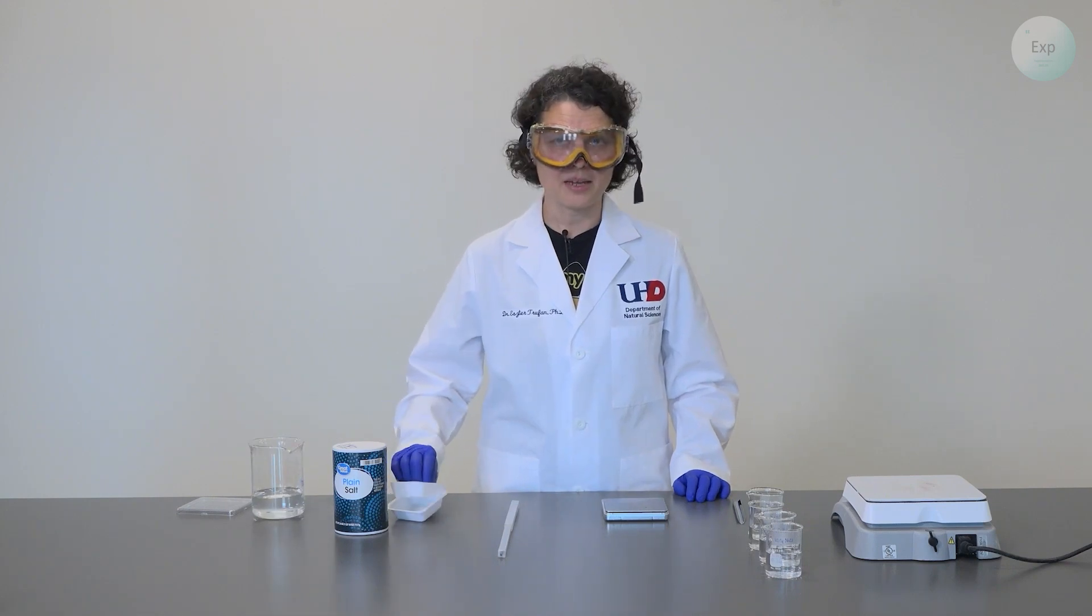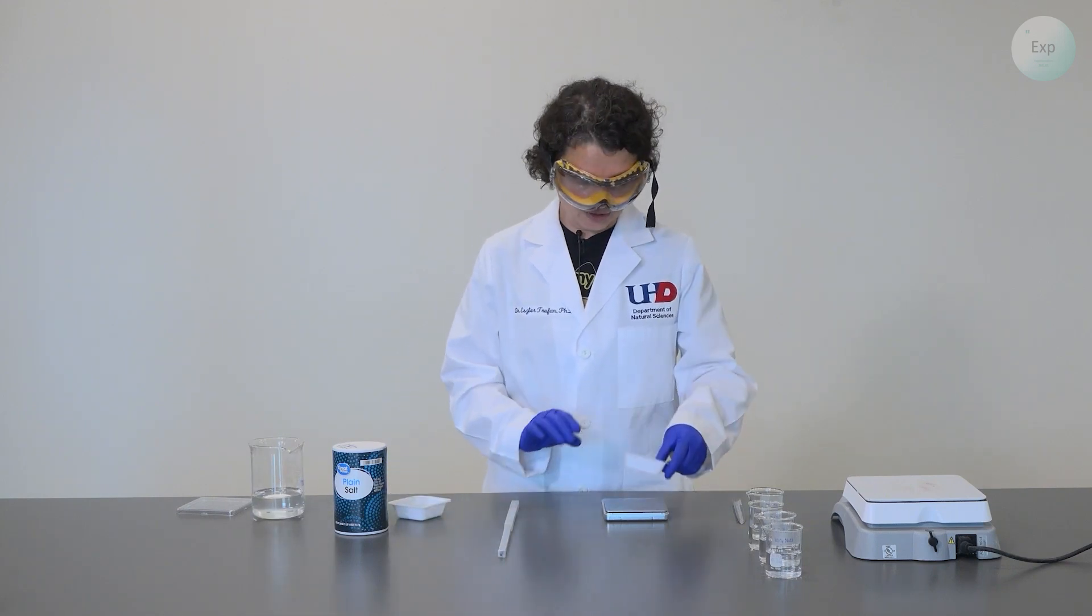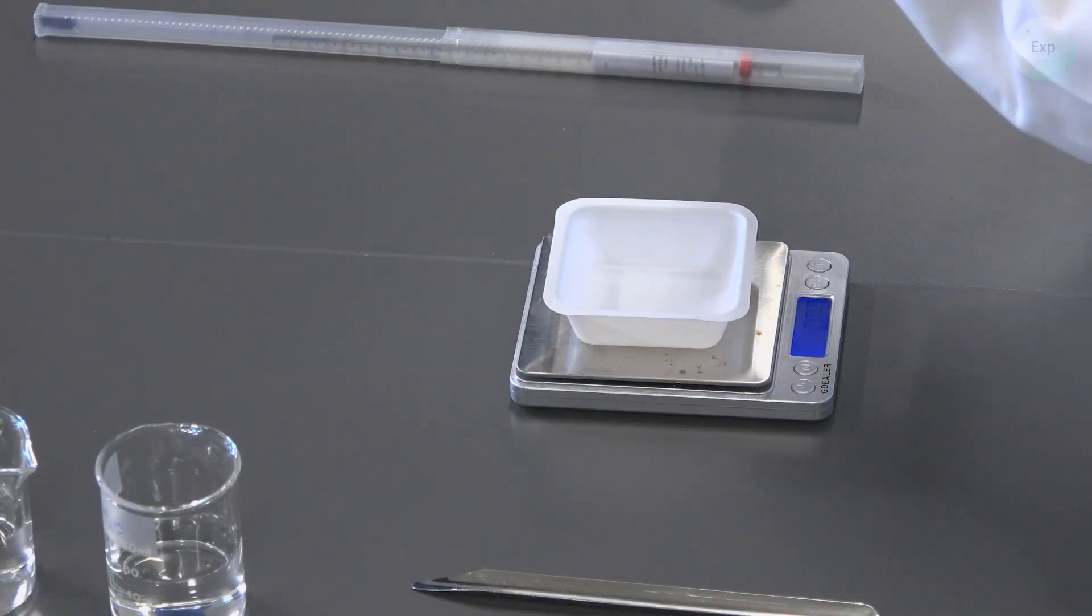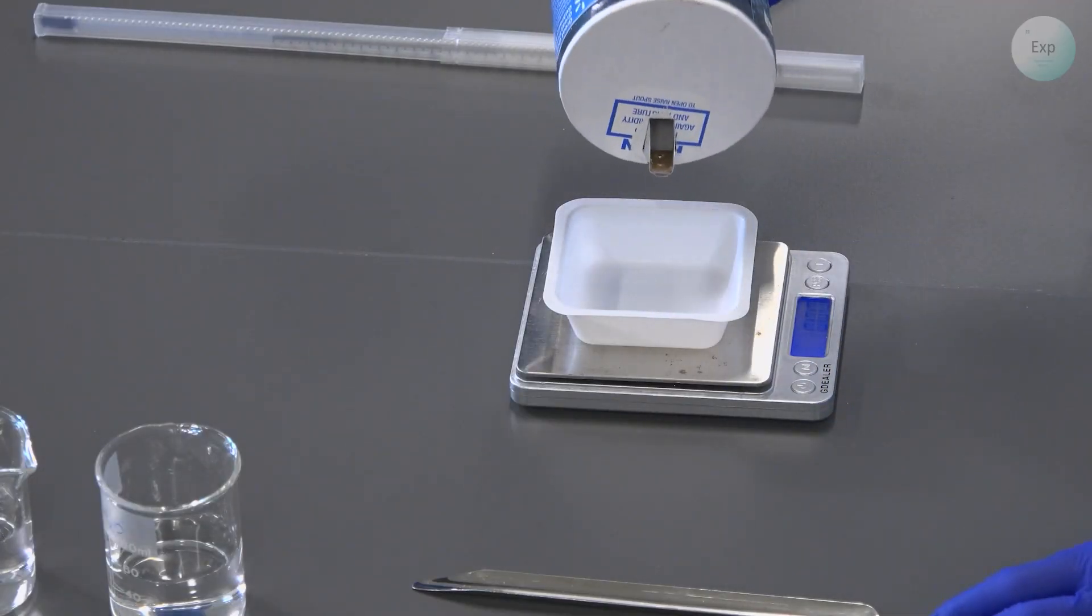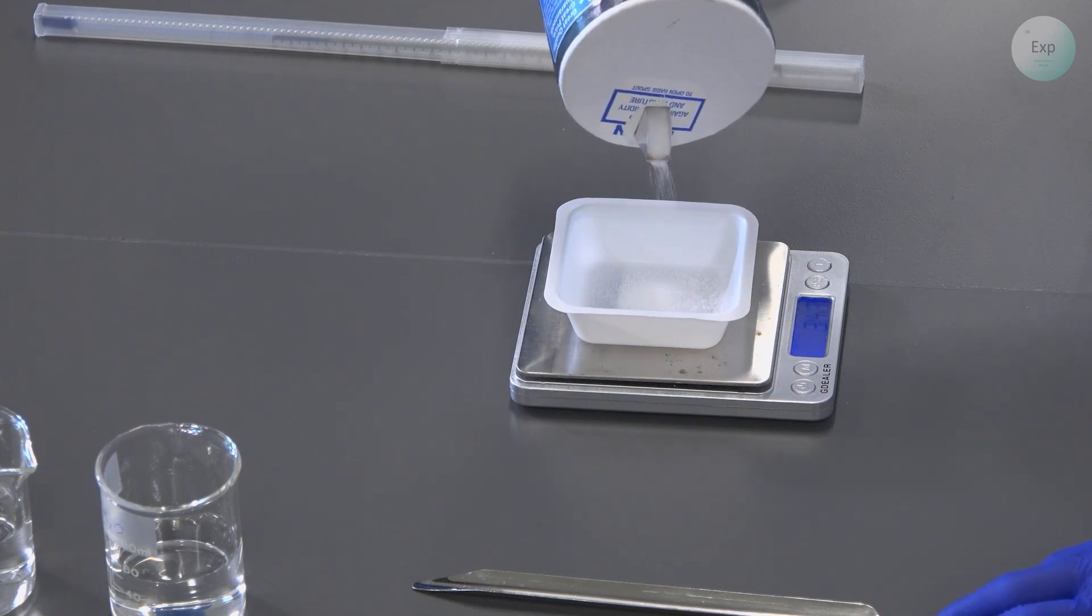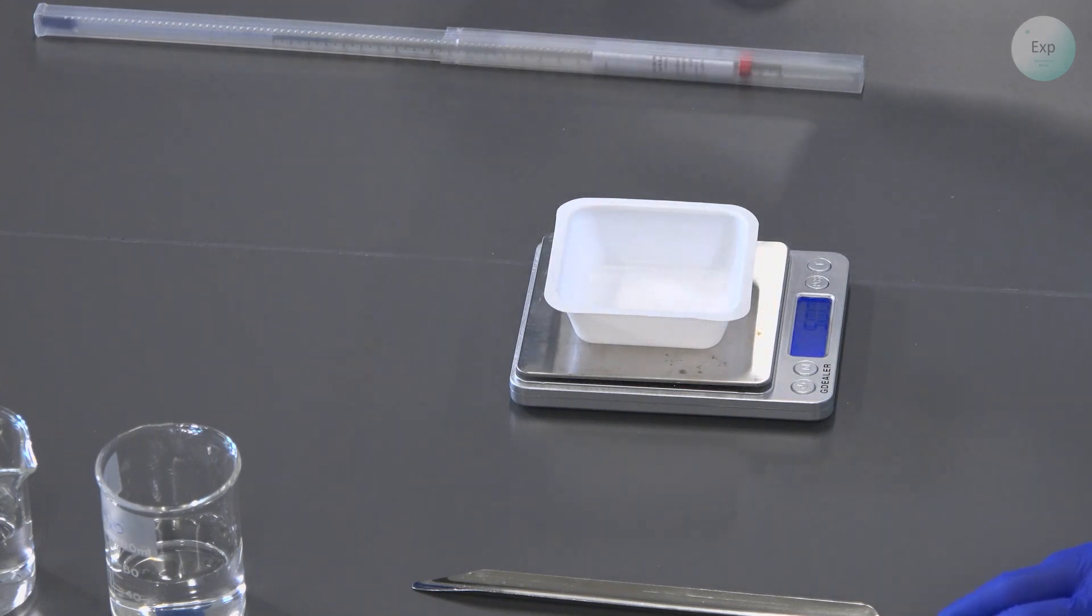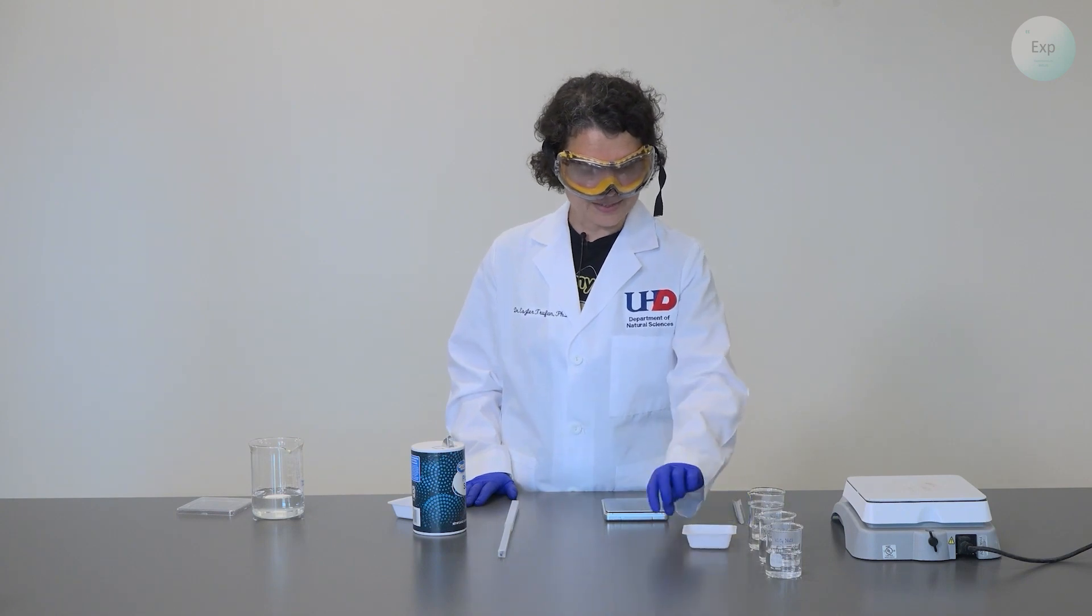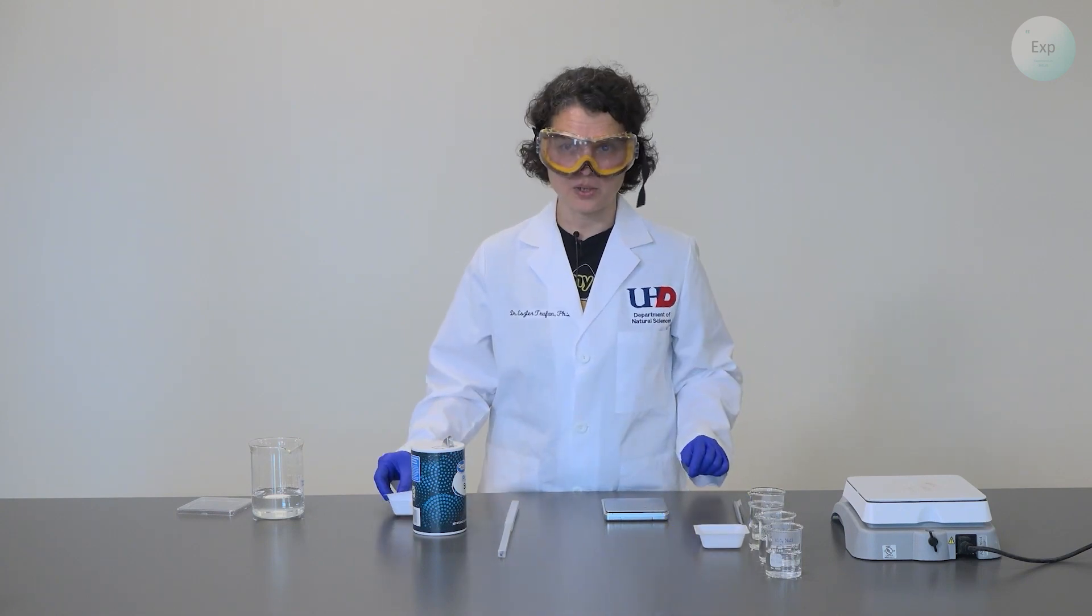Now I will measure out the amount of sodium chloride that will be added to each one. I will place my weighing boat on the scale, tare it, and then transfer 5 grams of sodium chloride to it. I have exactly 5.00 grams of sodium chloride. I will place it next to the beaker in which it will be transferred.